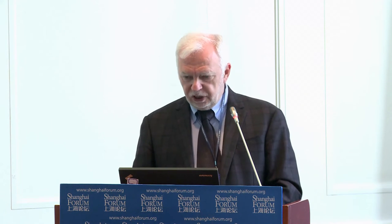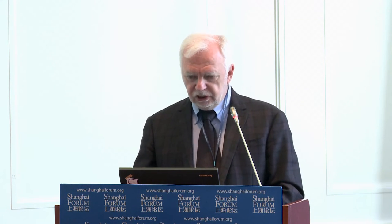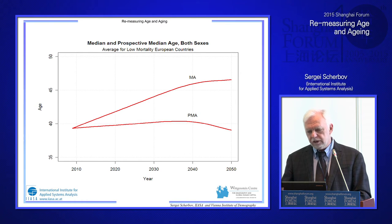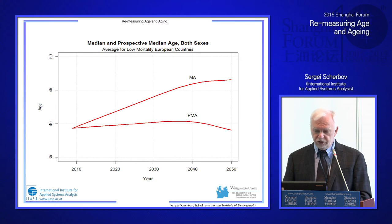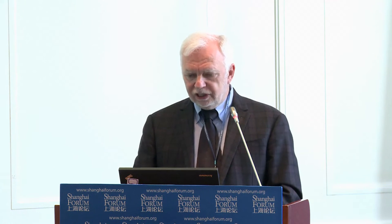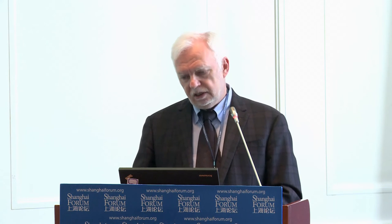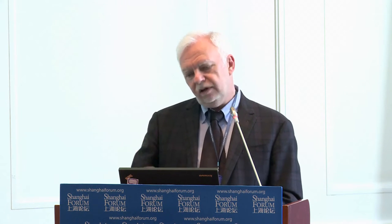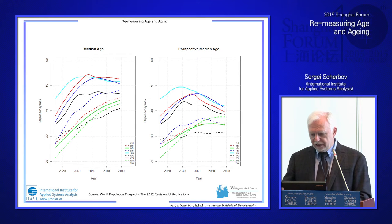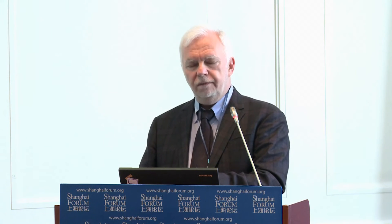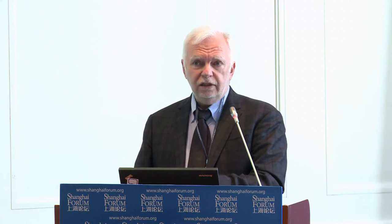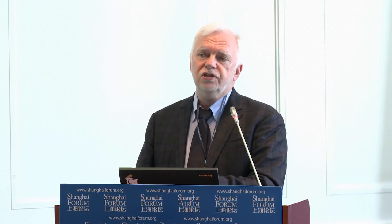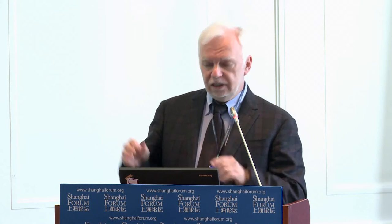For projections of European Union low-mortality countries, the prospective median age goes in almost the opposite direction from the traditional median age. For selected Asian countries, the prospective median age is at least five or more years lower. These projections use United Nations forecasts, which we believe are overly pessimistic about future improvements in life expectancy.